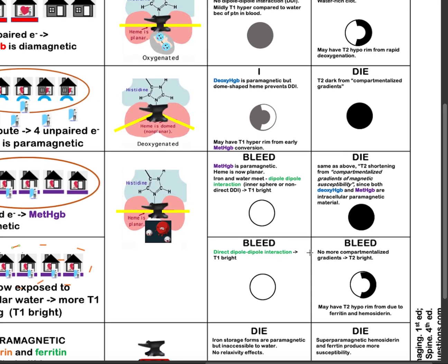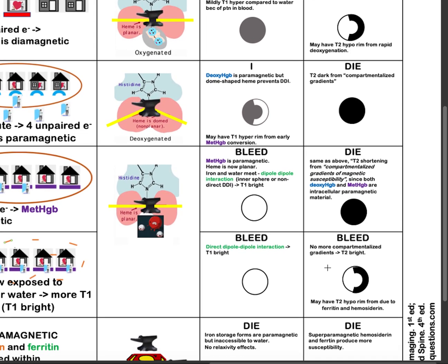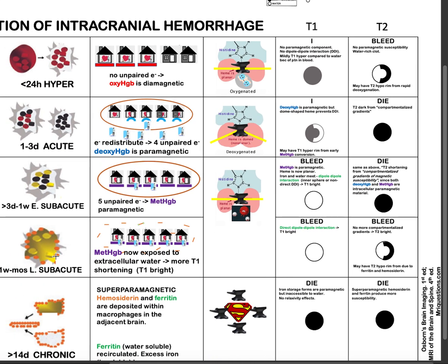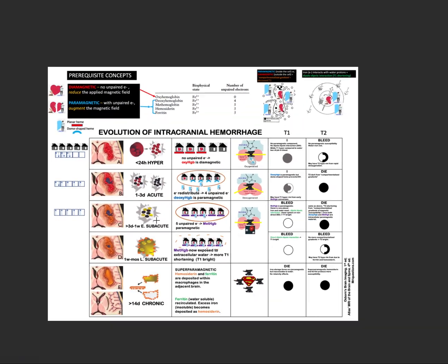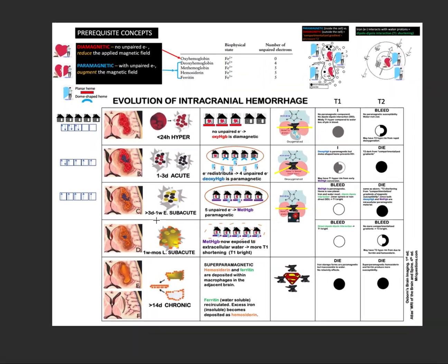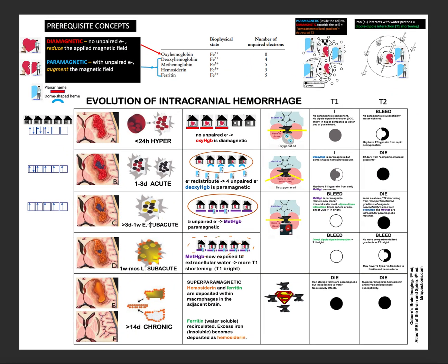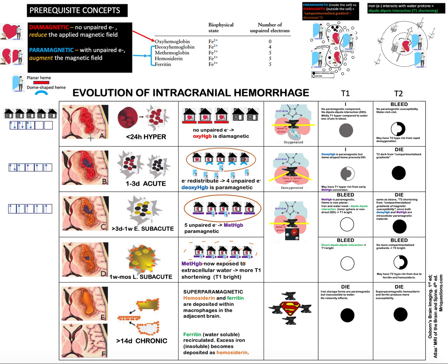In the late subacute stage, you can also have a T2 hypointense rim due to ferritin and hemosiderin. That covers the molecular basis of intracranial hemorrhage and the evolution of intracranial hemorrhage.